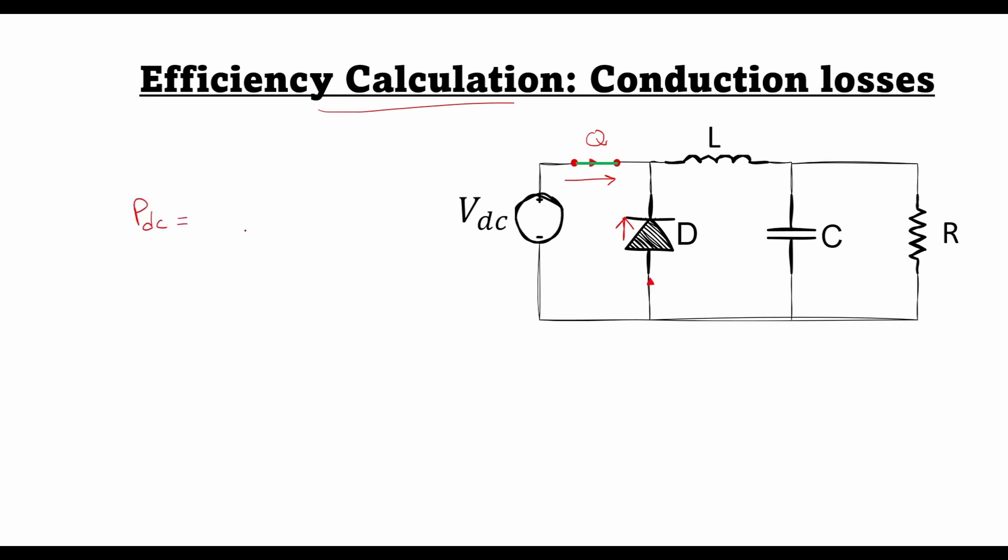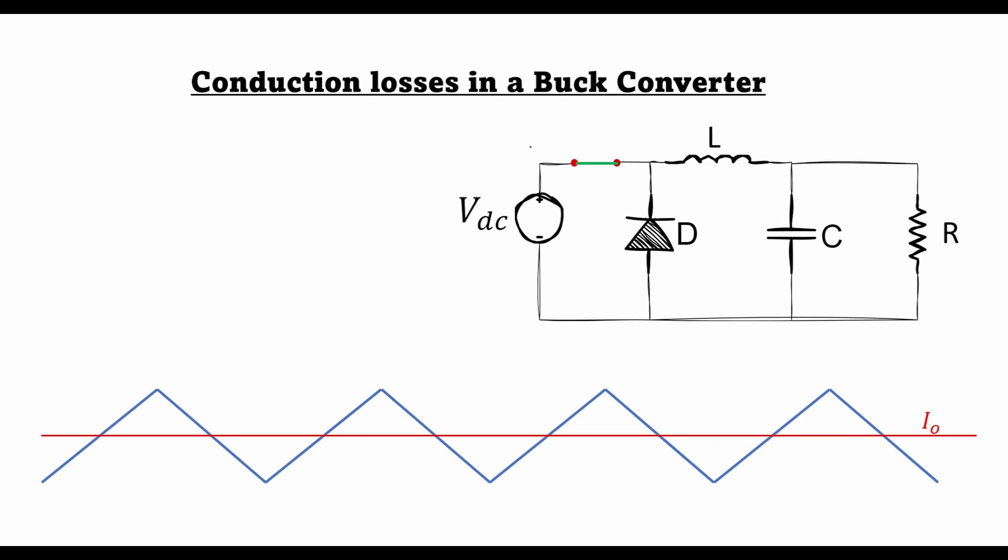PDC can be written as the loss in the transistor Q plus the loss in the diode D. There's another type of loss which is called the switching loss, due to the switching action of this transistor. We will consider this in a later lecture. These are usually more difficult to calculate and are also called the AC losses. In today's lecture we are focusing on the DC losses.